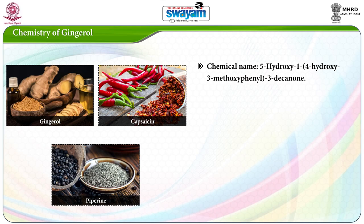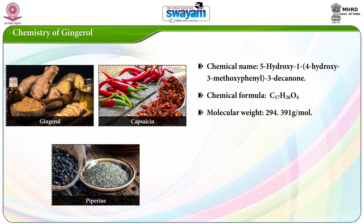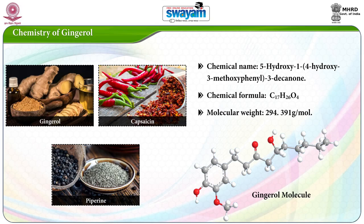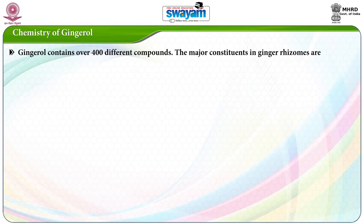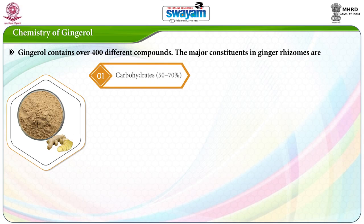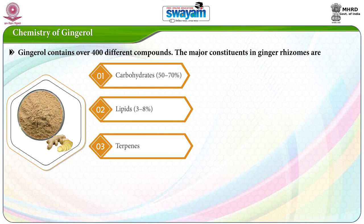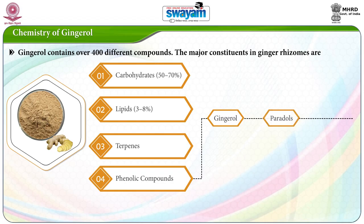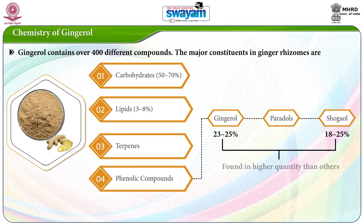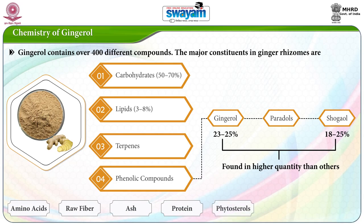The chemical name of gingerol is 5-hydroxy-1-(4-hydroxy-3-methoxyphenyl)-3-decanone. The chemical formula is C17H26O4 with a molecular weight of 294.391 grams per mole. Gingerol contains over 400 different compounds. The major constituents in ginger rhizomes are carbohydrates 50 to 70%, lipids 3 to 8%, terpenes and phenolic compounds. Phenolic compounds include gingerol, paradols and shogaol. Gingerols at 23 to 25% and shogaols at 18 to 25% are found in higher quantities than others. Besides these, amino acids, raw fibre, ash, protein, phytosterols, vitamins such as nicotinic acid and vitamin A, and minerals are also present.